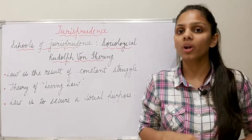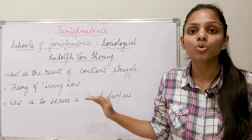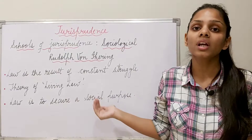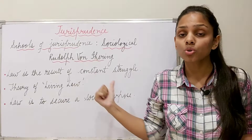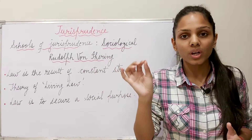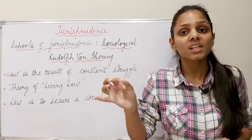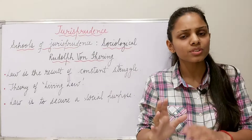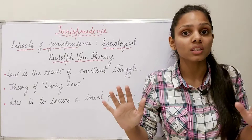Related to this is his third important point: law is to secure a social purpose. In simple words, law is to promote social interest, which I have already explained. Law has one purpose — to promote social interest. Social interest means the interest of society at large, which is nothing but the greatest happiness of the greatest number. So his perception is that law must be related to society, which he explains through his jurisprudence of interests — focusing on individual interest versus general interest and social interest.